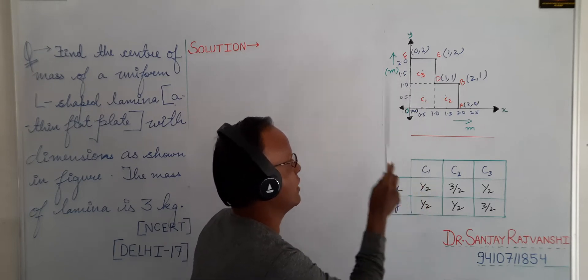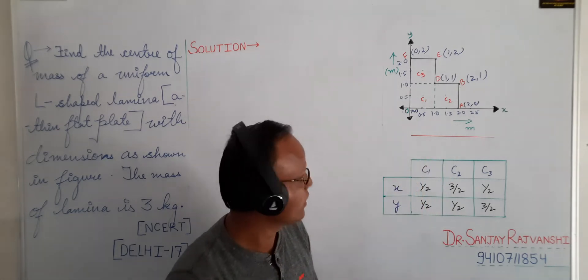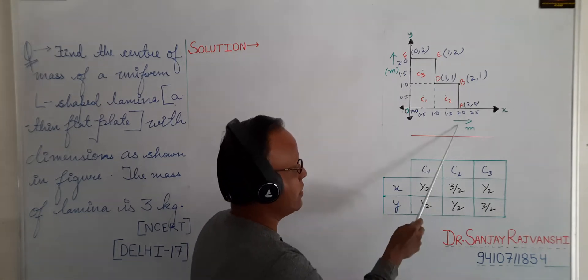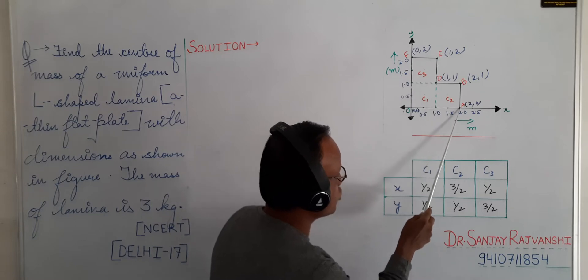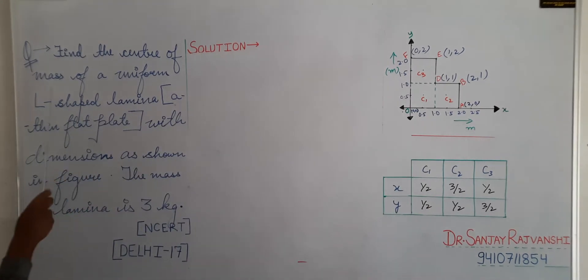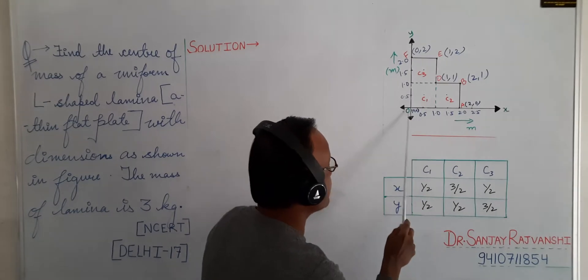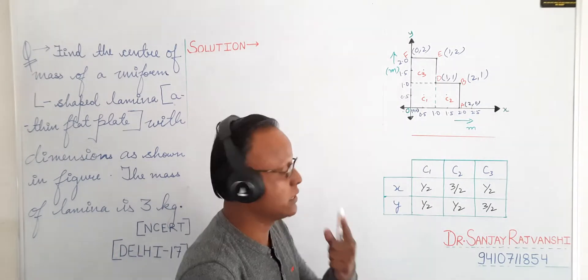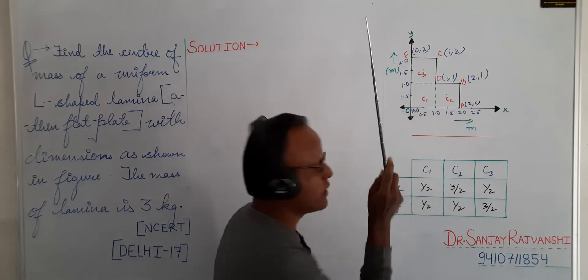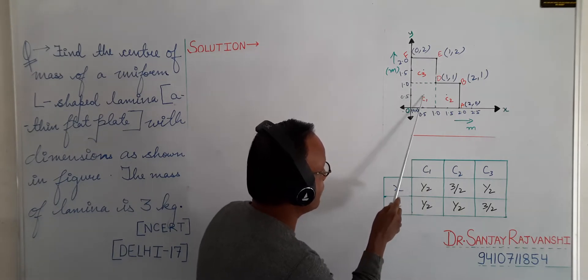I can say this is square 1, square 2, square 3. You can also mark the boundaries O, A, B, D, E, F — these are the boundaries of this L-shaped figure. The length of each square's side is 1 meter. So the coordinate of center of mass C1: the x-coordinate is 0.5 and y-coordinate is also 0.5.